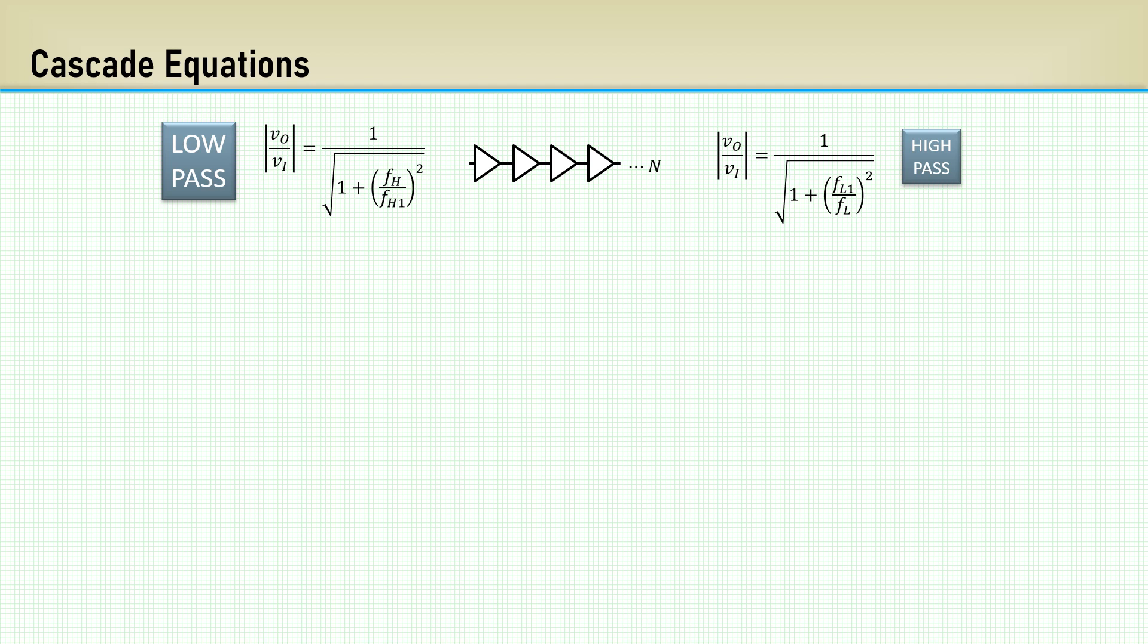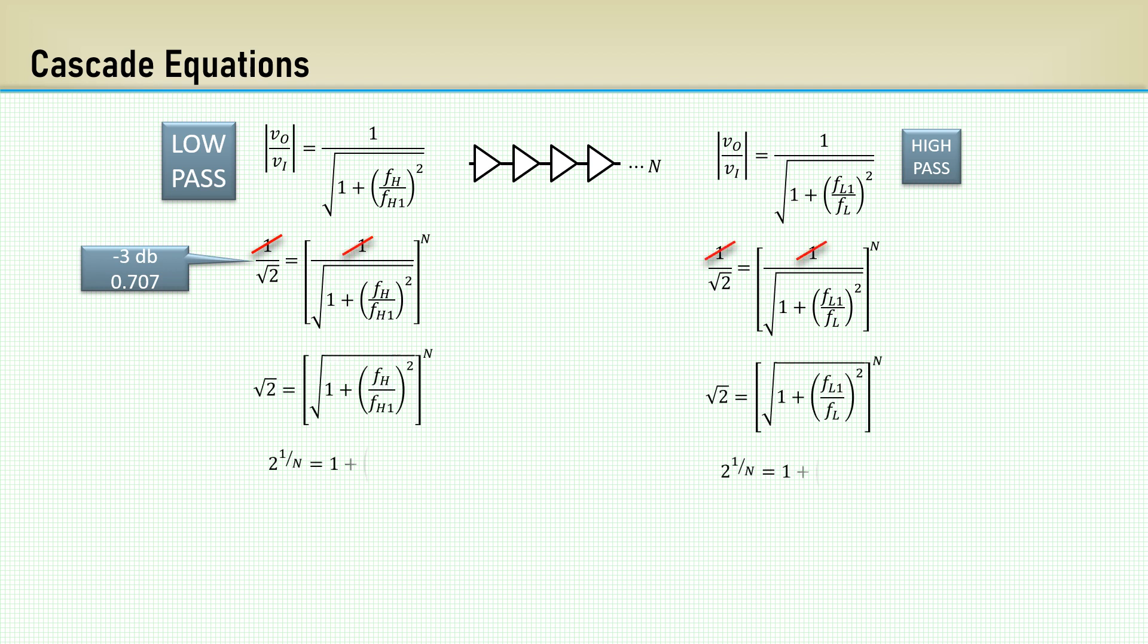Since we are cascading, we are multiplying the magnitude transfer functions together depending on the number of stages. We do that by raising the transfer function to N, the number of stages, and set it equal to the magnitude of the 3 dB corner amplitude which is 1 over the square root of 2. The numerators cancel, squaring each side and taking the nth root.